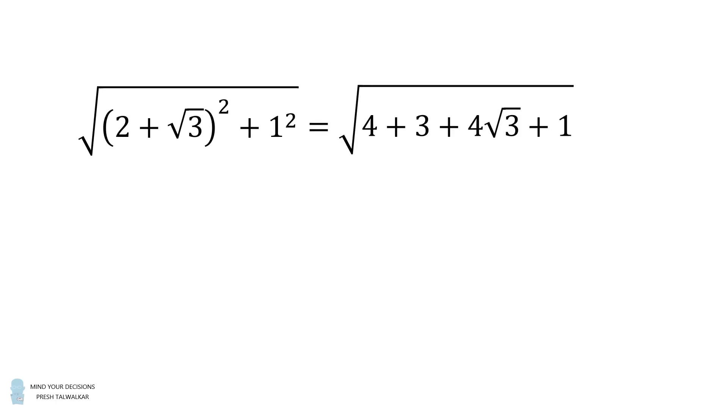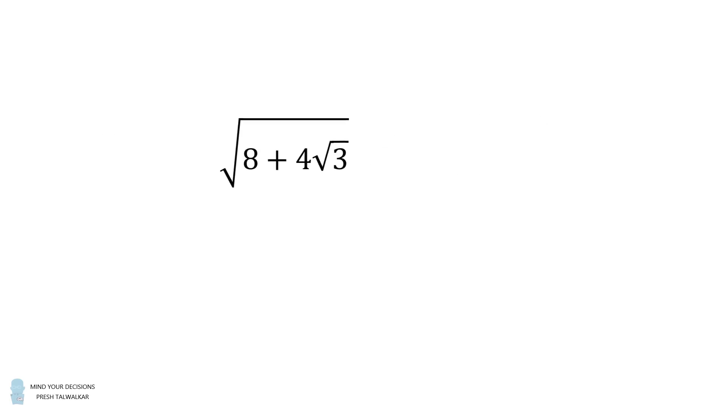So first, we'll expand the binomial, then we'll group like terms. So we're almost there. We just need to write this in terms of the form square root of x plus the square root of y.